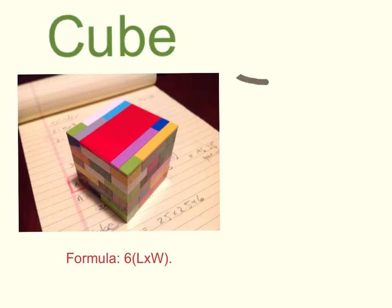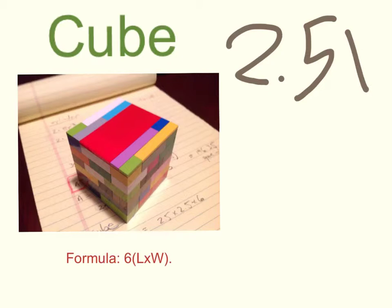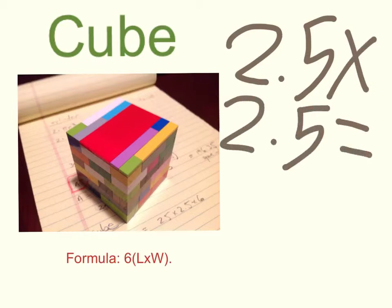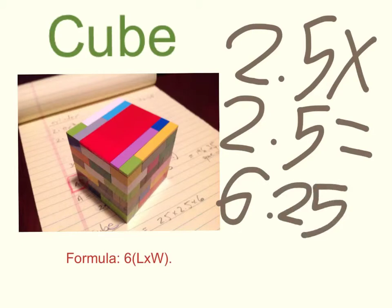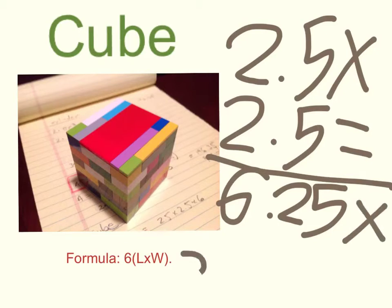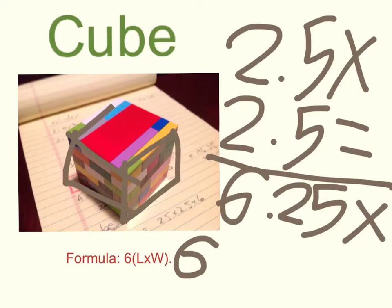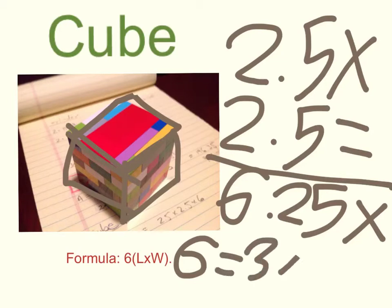2.5 times 2.5 equals 6.25. 6.25 times 6, so you can get all of the faces. Equals 37.5 inches squared.